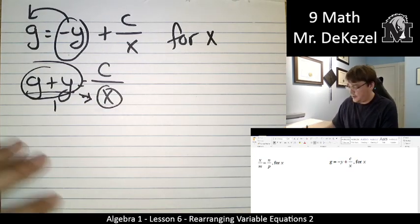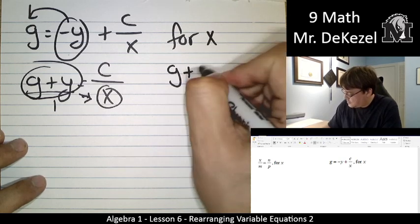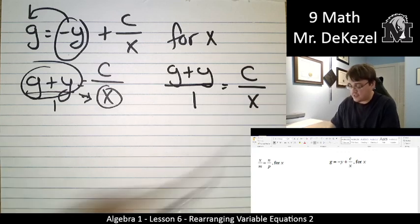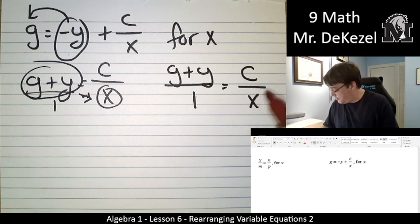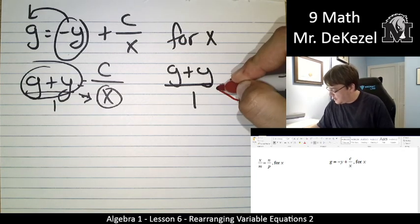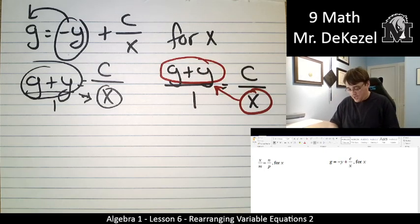OK, let me rewrite this more clearly. Just I'm going to rewrite the same thing. So g plus y over 1 is equal to c over x. And when we have a fraction and we have the variable on the bottom that we want to know, we can go ahead and switch it with what's on the top on the other side.